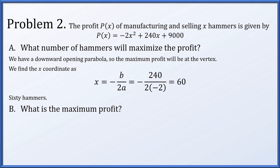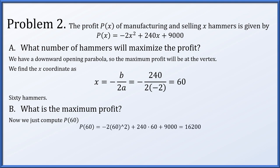Next, what is the maximum profit? We take x = 60 and plug it into our profit function, and this simplifies down to 16,200 — presumably in dollars. So 16,200 is the maximum profit.